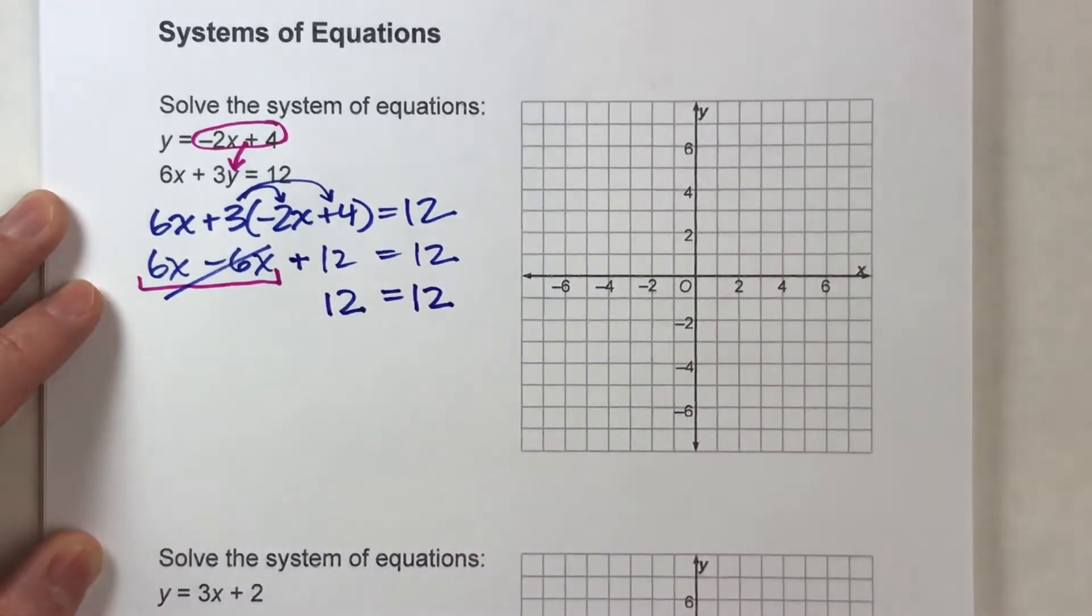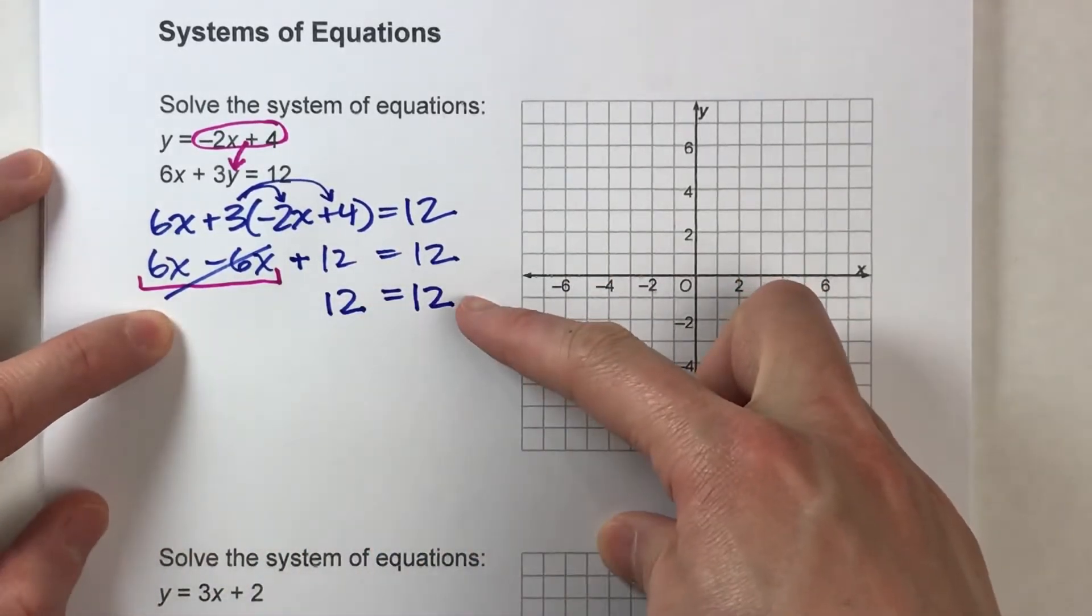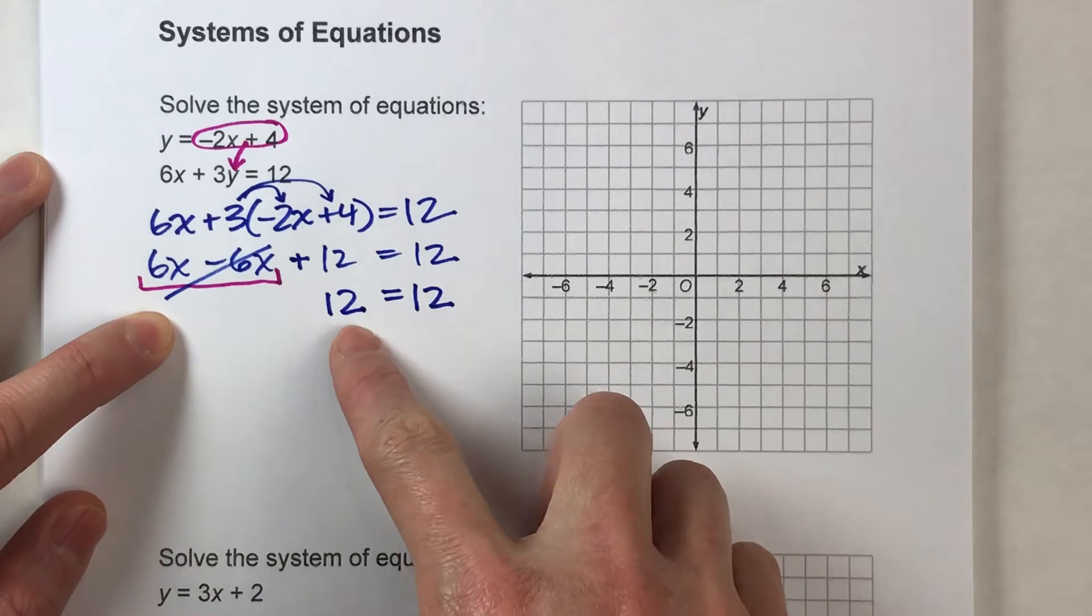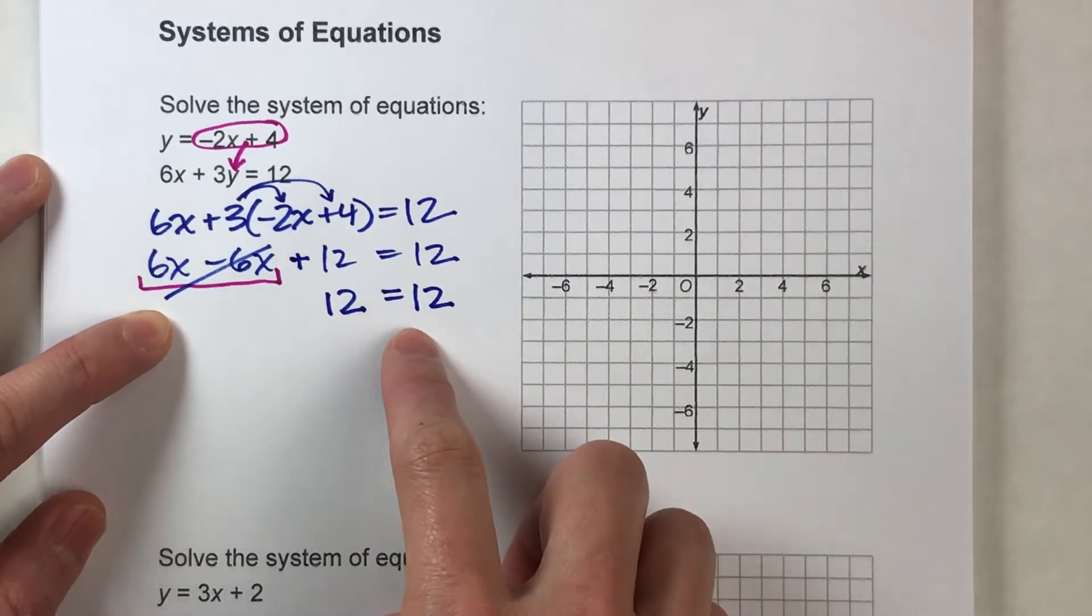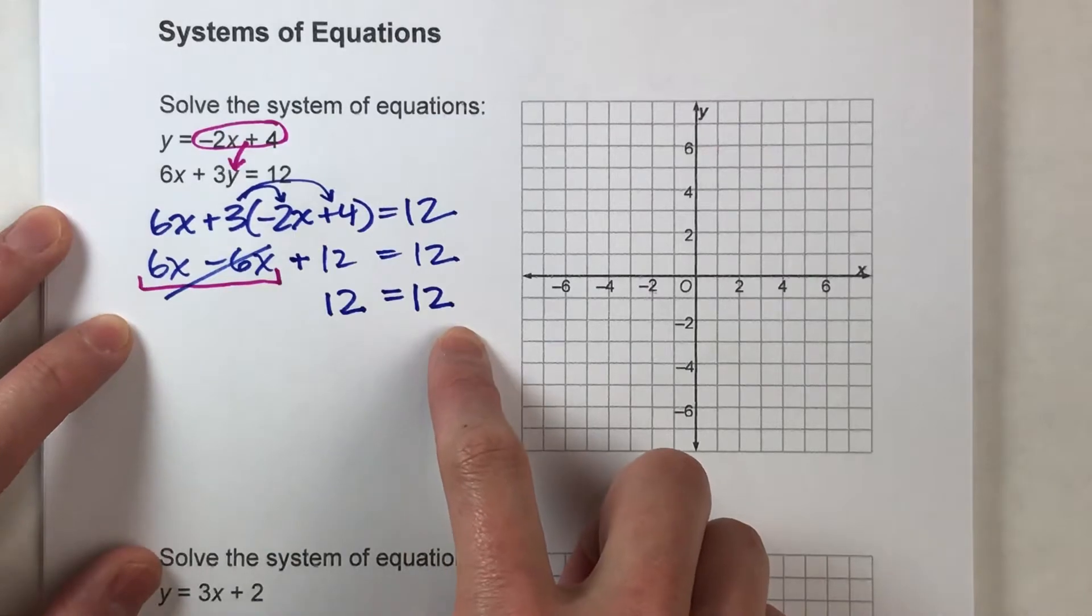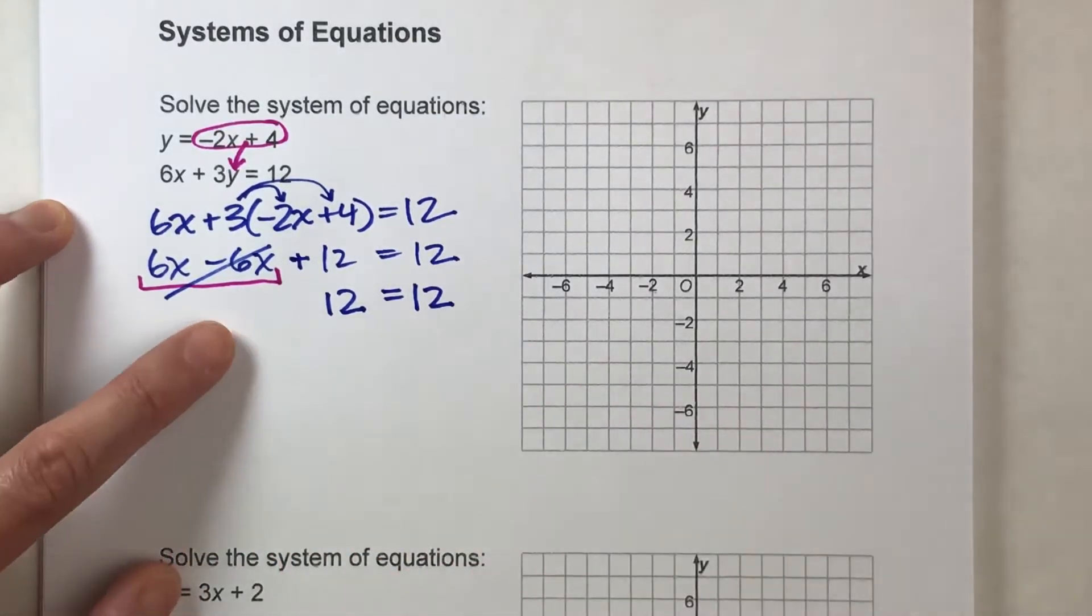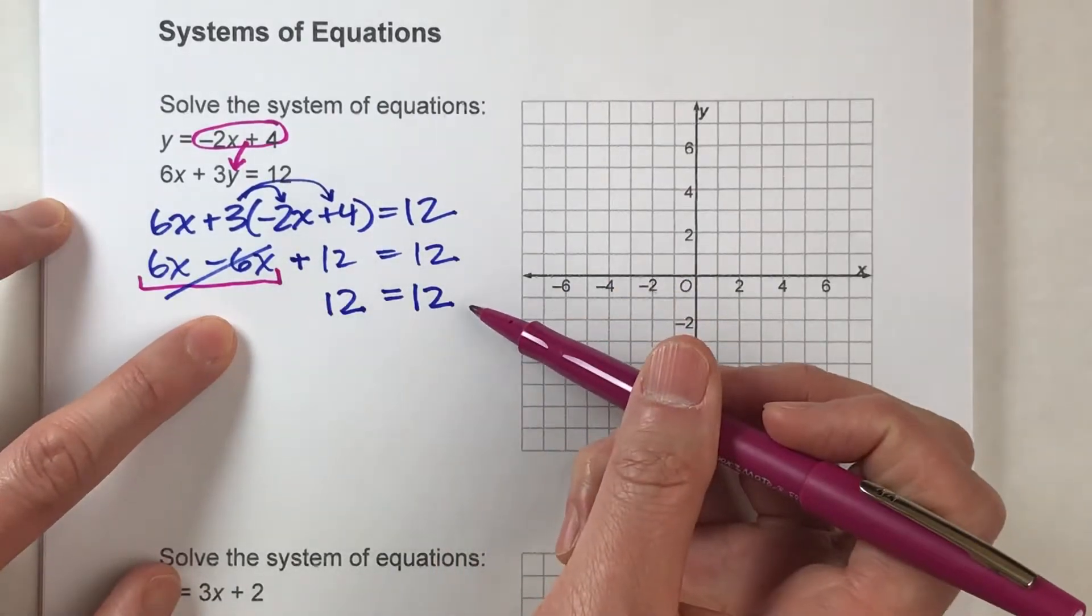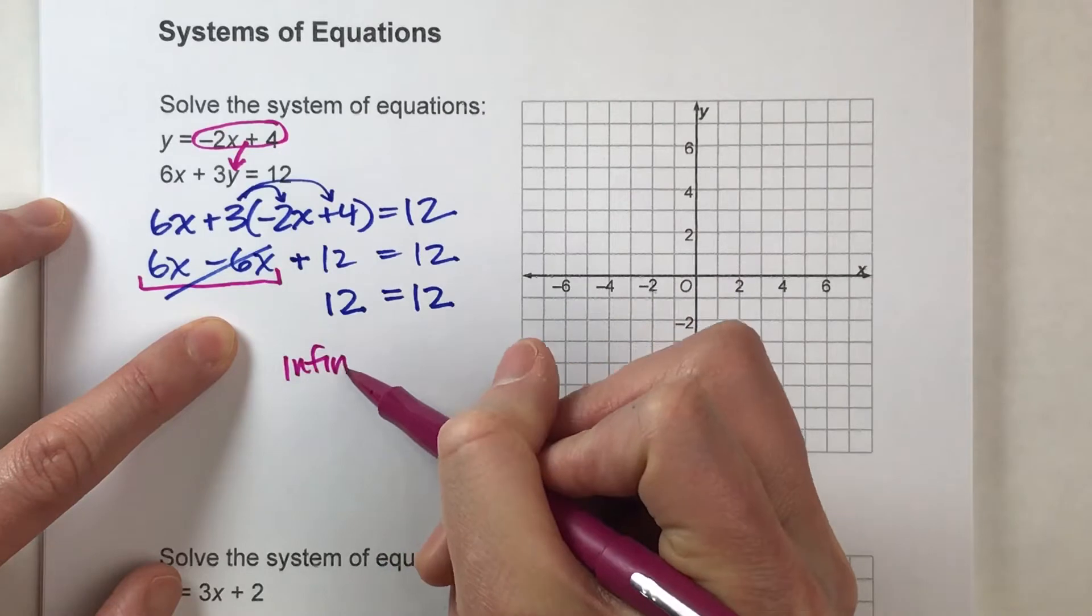Now notice, I'm left now with an equation with no variables in it, and it says 12 is equal to 12, which is a true statement. 12 will always equal 12. But because there's no variables, there's nothing left for me to do. So I look at this and I say, this tells me that there are infinitely many solutions.